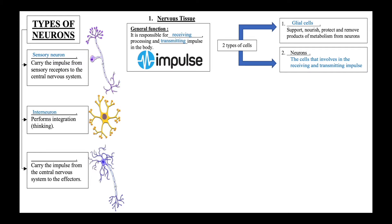The interneuron is known to perform integration — in other words, perform thinking. The third type of neuron is known as the motor neuron, or efferent neuron. Motor neurons carry impulses out of the central nervous system towards the effectors. For your syllabus, you are only required to learn about the motor neuron in detail.